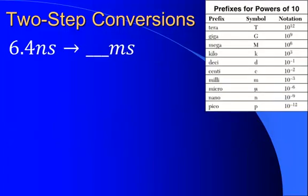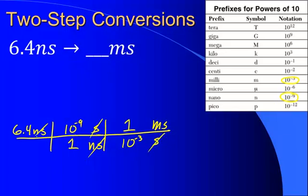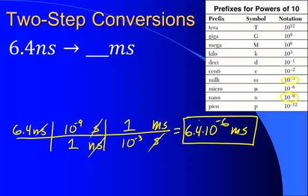We can do this the other direction too, and we should get the same value. Starting with 6.4 nanoseconds, we want to convert back to milliseconds. First convert nanoseconds to seconds: nano means 10 to the minus 9, write that on the side with no prefix, put a 1 on the other side. Now left with seconds, so do this again: seconds in the denominator, milliseconds in the numerator. Milli means 10 to the minus 3 — put that on the side with no prefix in the denominator, put a 1 on the other side. Nanoseconds and seconds cancel out. So 6.4 times 10 to the minus 9 divided by 10 to the minus 3 gives 6.4 times 10 to the minus 6 milliseconds — exactly what we started with.